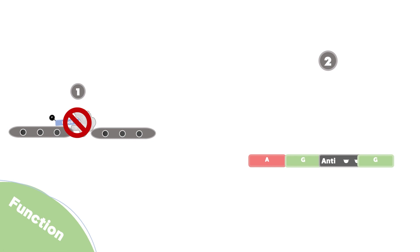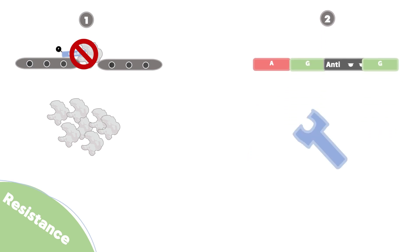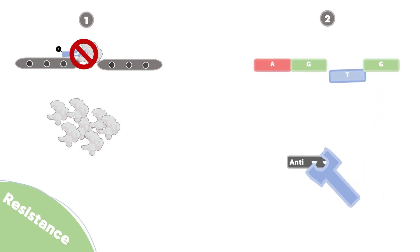Cancer cells can resist those two killing mechanisms as follows: first, the cell can increase the number of enzymes to compensate for the inhibited enzyme. Secondly, it can increase the production of repair enzymes that detect and remove the false nucleotides.